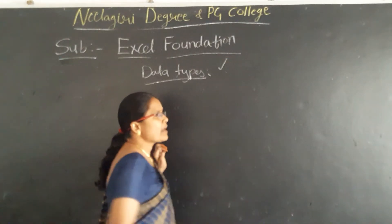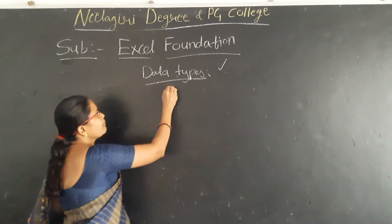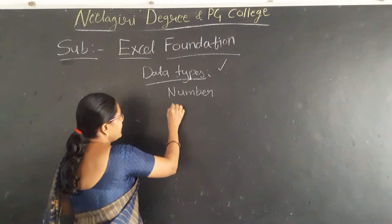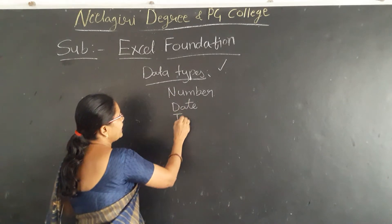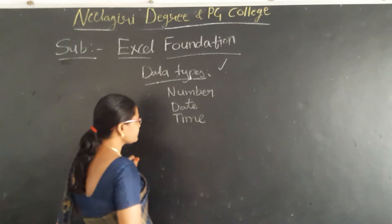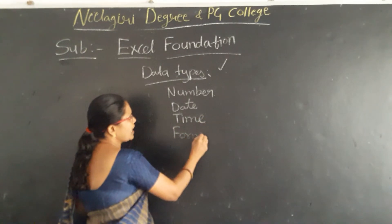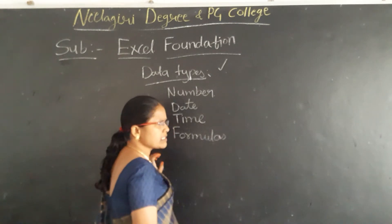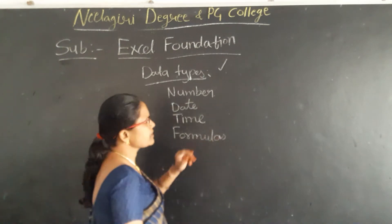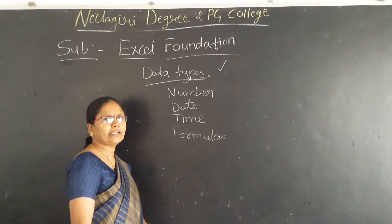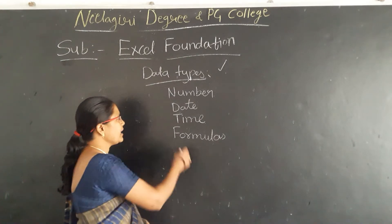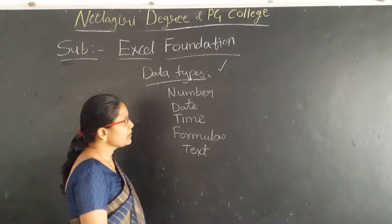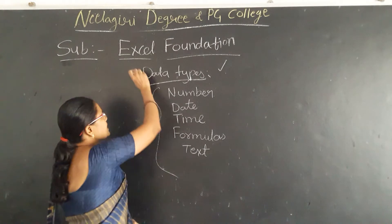That's why we classify data into data types — based on user requirement, they can enter number type of data, date type of data, time type of data, and formula type of data. Formulas are the most important concepts in Excel. The formula type of data is used to calculate numbers in the Excel sheet, and text-related data will also be used.